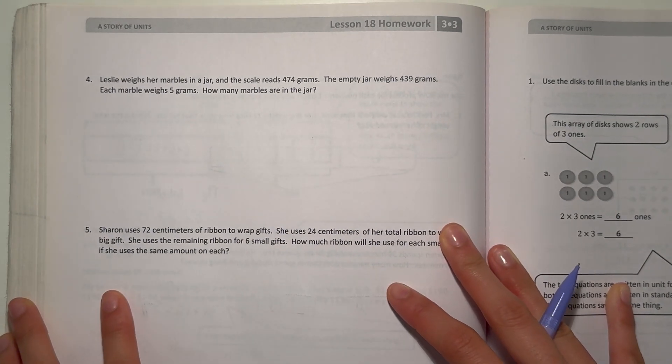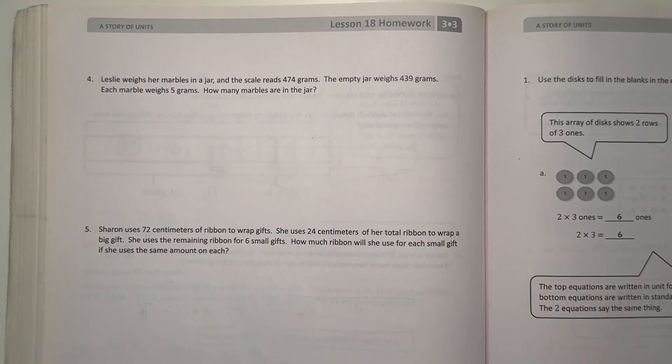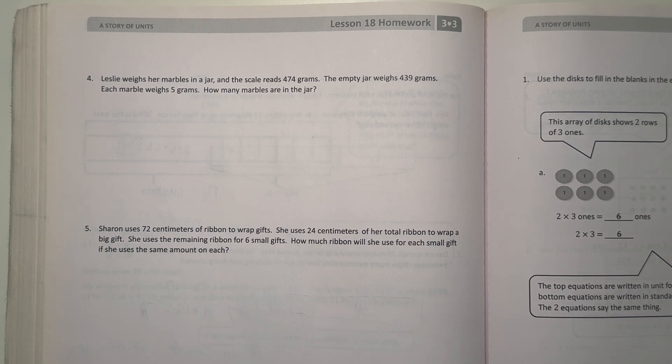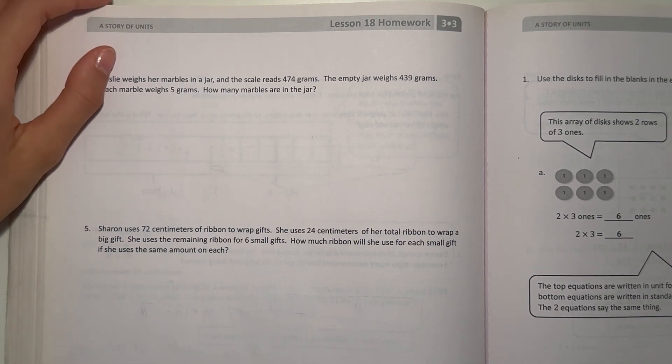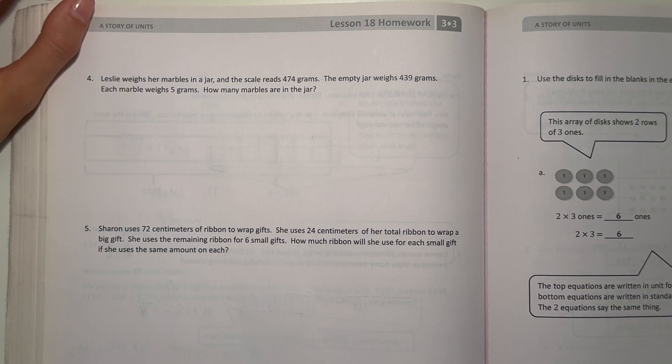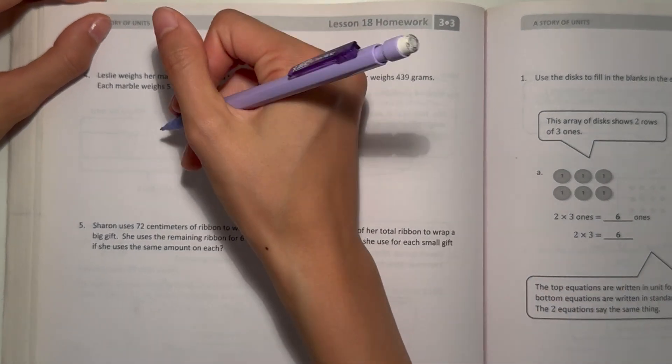Number 4. Leslie weighs her marbles in a jar. The scale reads 474 grams. The empty jar weighs 439 grams. Each marble weighs 5 grams. How many marbles are in the jar?